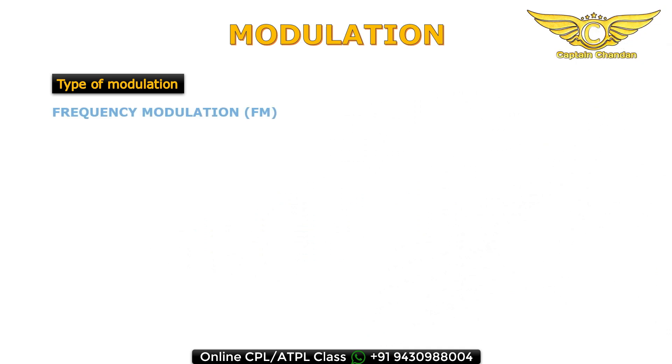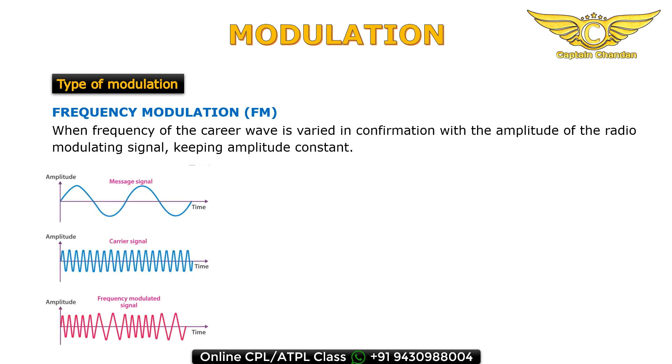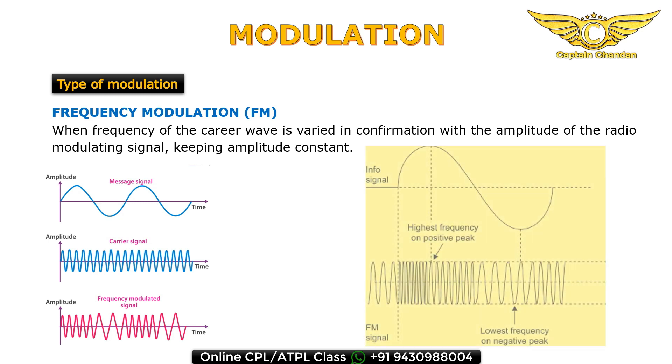Frequency modulation: when frequency of a carrier wave is varied in conformance with the amplitude of the modulating signal and keeping the amplitude constant. When the amplitude of the audio signal is on the positive side, then the frequency of the carrier wave changes according to the amplitude of the audio signal. Here the amplitude of the carrier wave is constant.